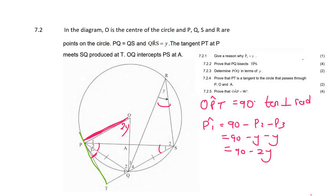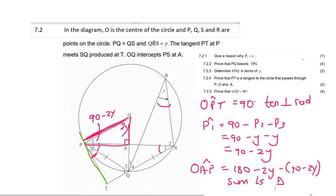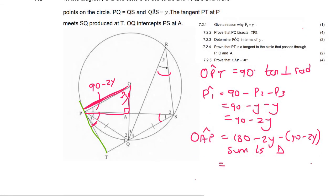So now, we can easily work out OAP, because we can work inside this triangle now, because we have P1 is 90 minus 2y. We can say that angle OAP is equal to 180 minus 2y minus 90 minus 2y. And that's because of sum of angles in a triangle. And so if we go work that out, we would find that it's going to be equal to 180 minus 2y minus 90 plus 2y. And so you're going to end up with 90 degrees.